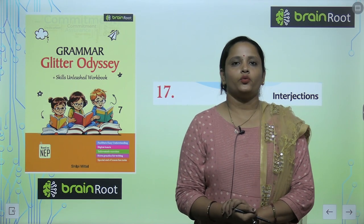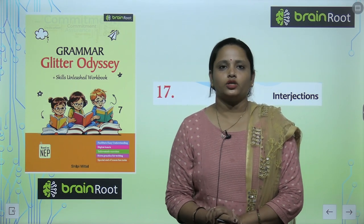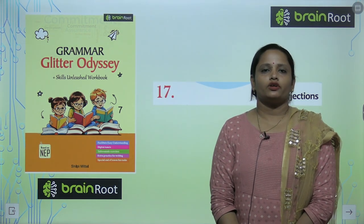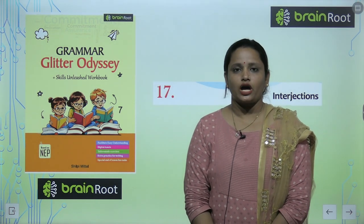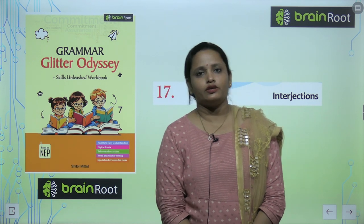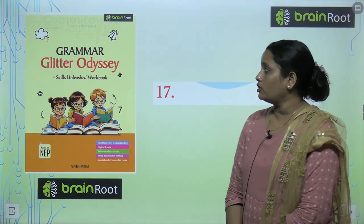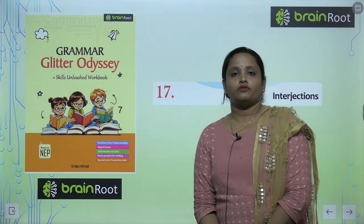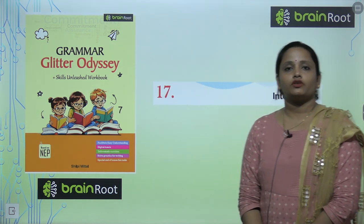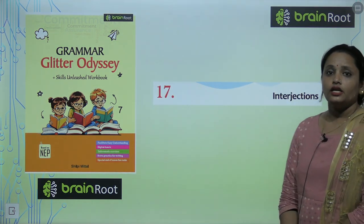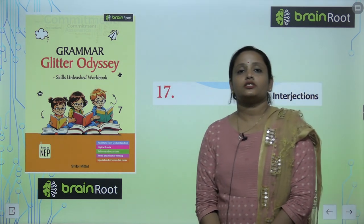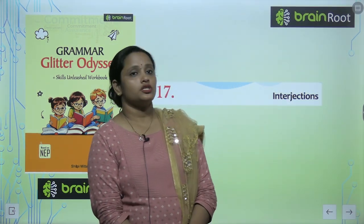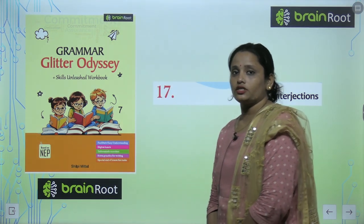Hello my dear kids, welcome back to the Brain Root series by Amit Publishing House. I am Vandana and we are learning English grammar class 7. Here is a book and the name is Grammar Glitter Odyssey, and today we are going to start with chapter number 17 — the name of the chapter is Interjections. So let's start this chapter.